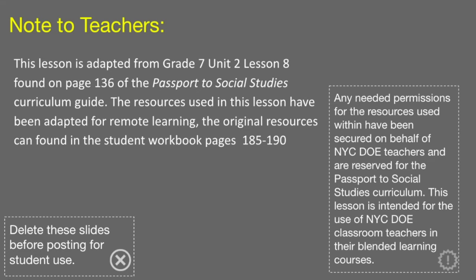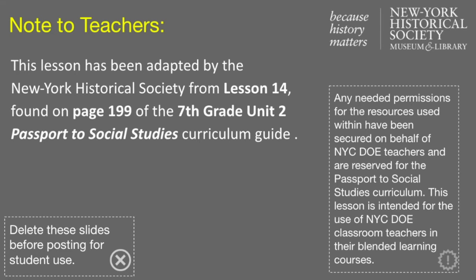This lesson is adapted from Grade 7, Unit 2, Lesson 8, found on page 136 of the Passport to Social Studies Curriculum Guide. The resources used in this lesson have been adapted for remote learning, and the original resources can be found in the student workbook pages 185 to 190. This lesson has also been adapted by the New York Historical Society from Lesson 14, found on page 199 of the 7th grade Unit 2 Passport to Social Studies Curriculum Guide.